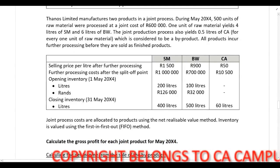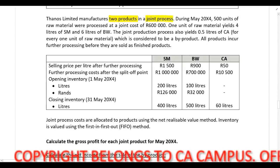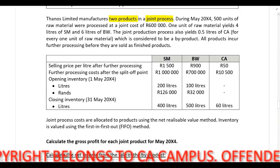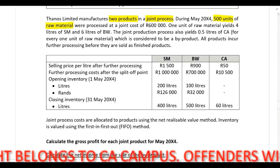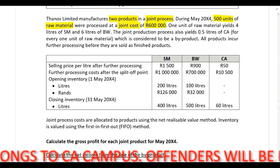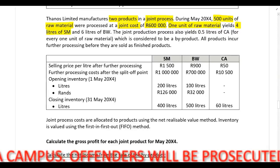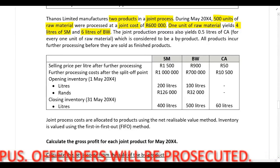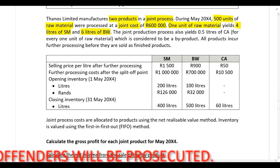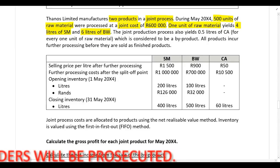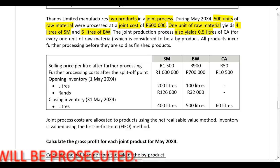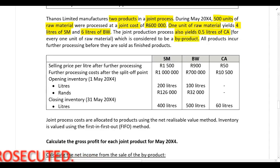Thanos Limited manufactures two products in a joint process. During May 20X4, 500 units of raw material were processed at a joint cost of 600,000 Rand. One unit of raw material yields 4 liters of SM and 6 liters of BW. Now the joint production process also yields 0.5 liters of CA, which is considered to be a byproduct.